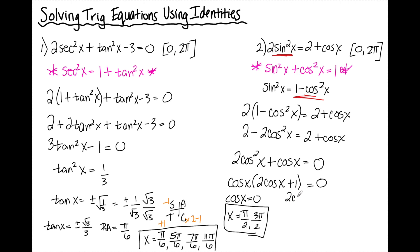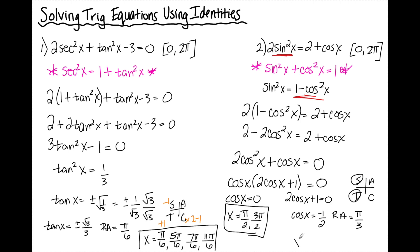On the right side, 2 cosine x plus 1 equals 0. Subtracting 1 and dividing by 2 gives cosine x equals negative 1/2. The reference angle for cosine x equal to negative 1/2 is π/3. Drawing my ASTC chart, cosine is negative in the second and third quadrants. In the second quadrant, minus 1 from the denominator gives 2π/3, and in the third quadrant, plus 1 gives 4π/3. So my four solutions for number 2 are π/2, 3π/2, 2π/3, and 4π/3.